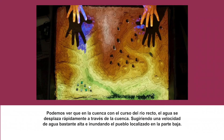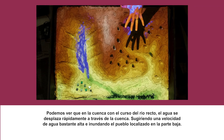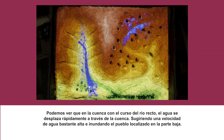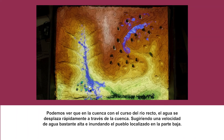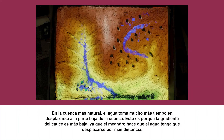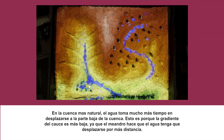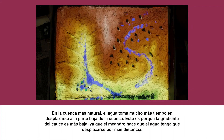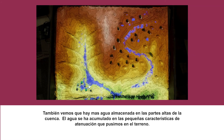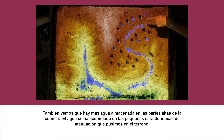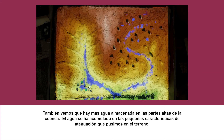You can see that in the straight catchment, the water has moved quickly and is already at the bottom — it had quite a lot of velocity and has flooded the settlement. In the more naturalised catchment with the meandering channel, the water is taking a lot longer to reach the bottom because the gradient of the channel is shallower as the water has further to travel. We can also see quite a lot of water staying up in the catchment, being stored by the natural features.